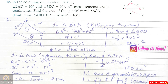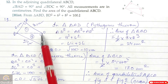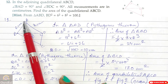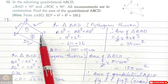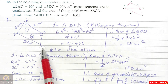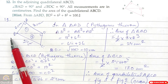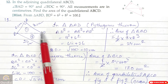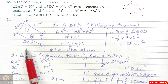In the adjoining quadrilateral ABCD, angle BAD is 90 degrees and angle BDC is 90 degrees. All measurements are in centimeters. We need to find the area of quadrilateral ABCD. AB is 6 cm, AD is 8 cm, and BC is 26 cm.